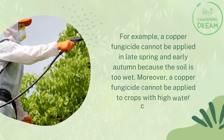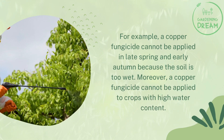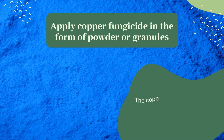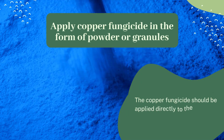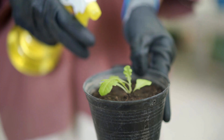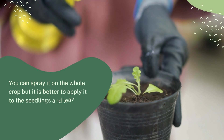Moreover, a copper fungicide cannot be applied to crops with high water content. The most effective and safe way of using copper fungicide is to apply it in the form of powder or granules. The copper fungicide should be applied directly to the crop plants at the rate on the label.